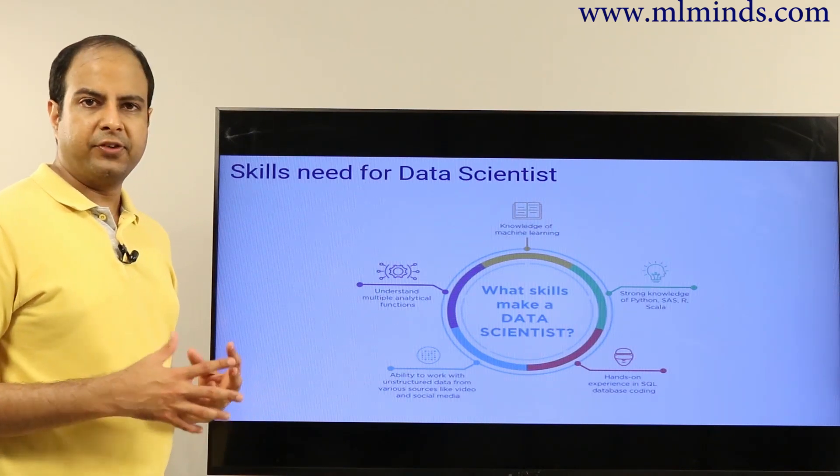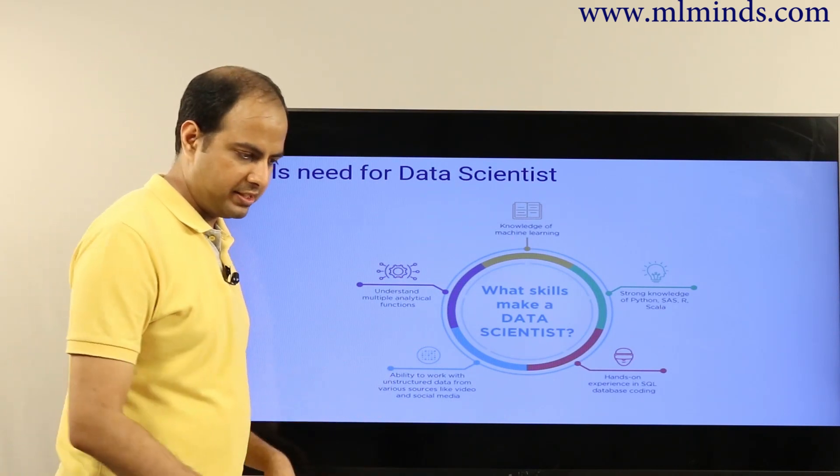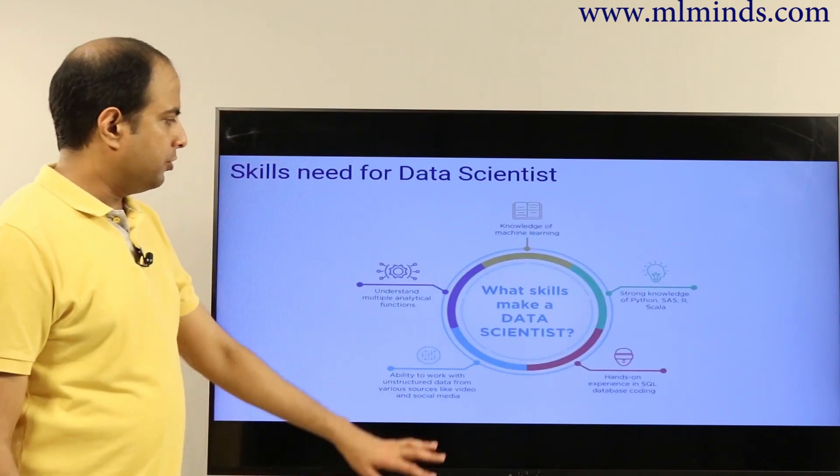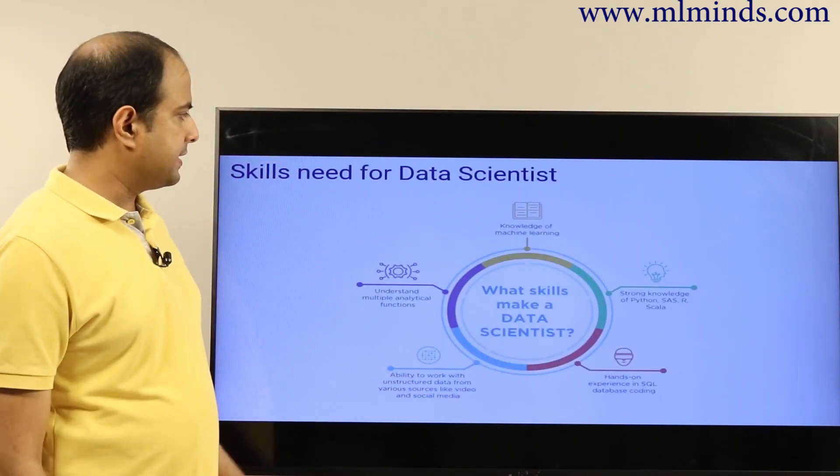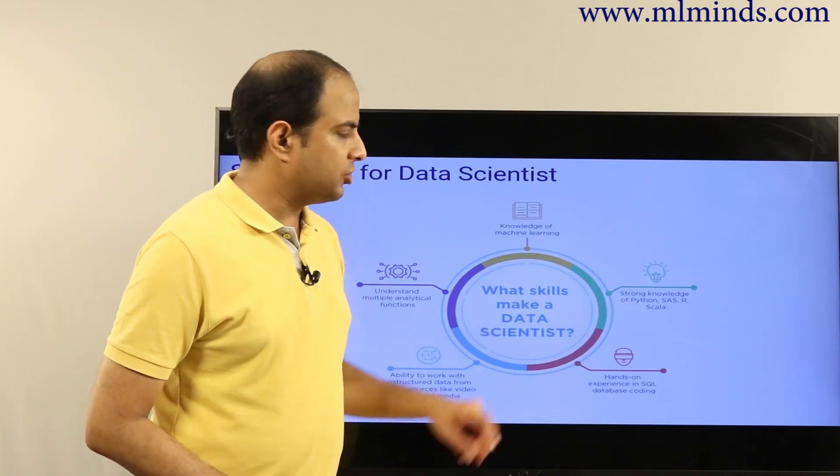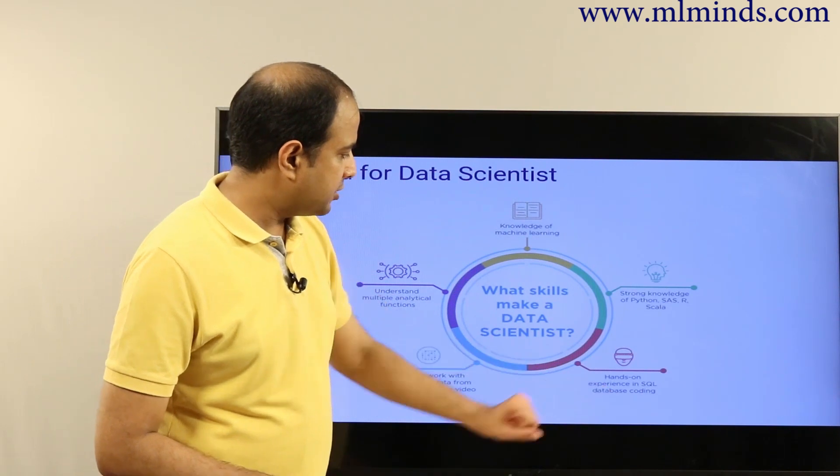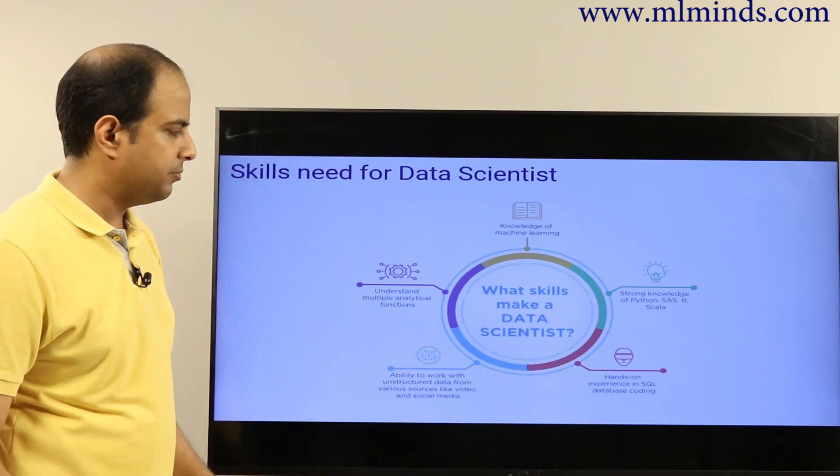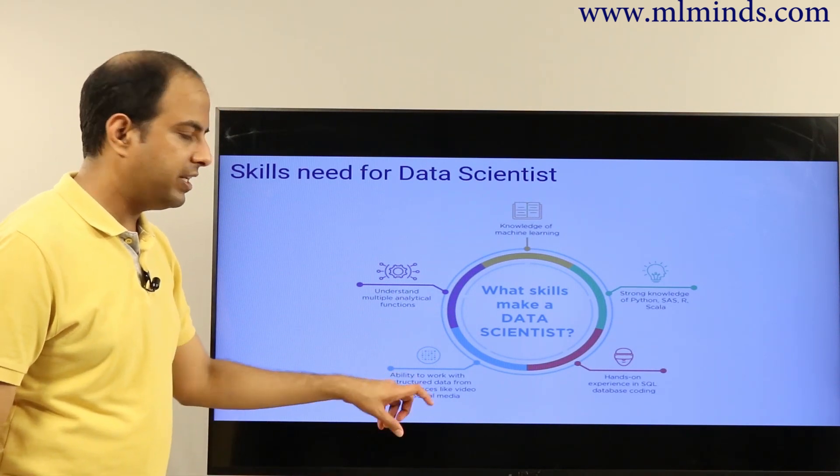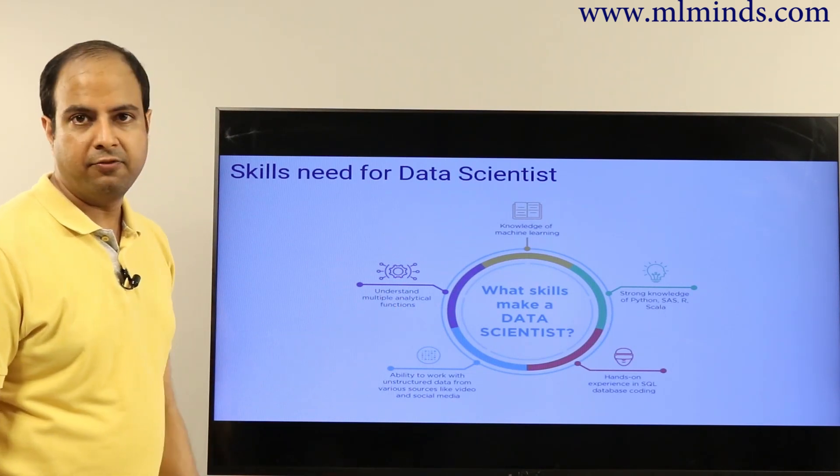We can understand the differences between the three based on what skills are required. If you want to become a data scientist, the skills required are: knowledge of machine learning, strong knowledge of Python or SAS or R and Scala, hands-on experience in SQL database coding, ability to work with unstructured data from various sources like video and social media data, and understanding multiple analytical functions.